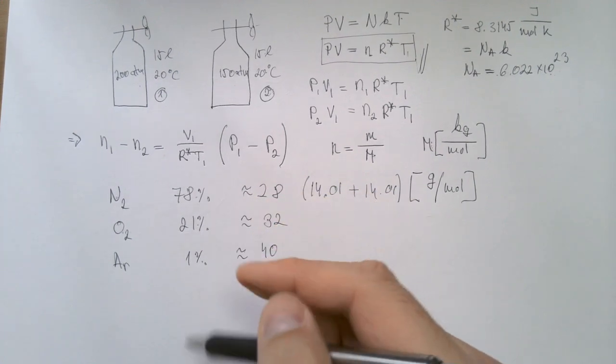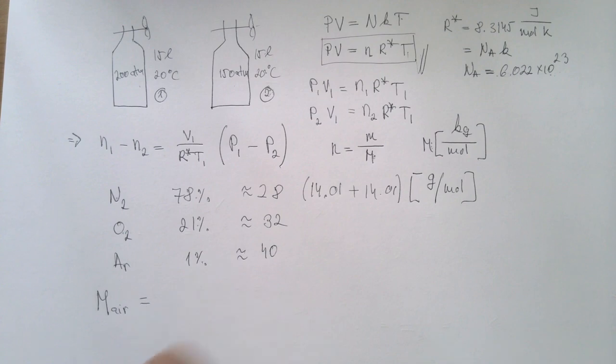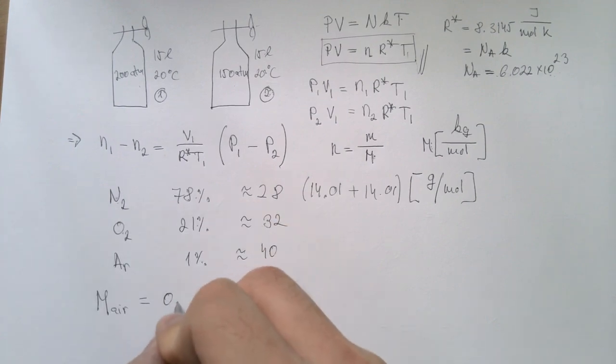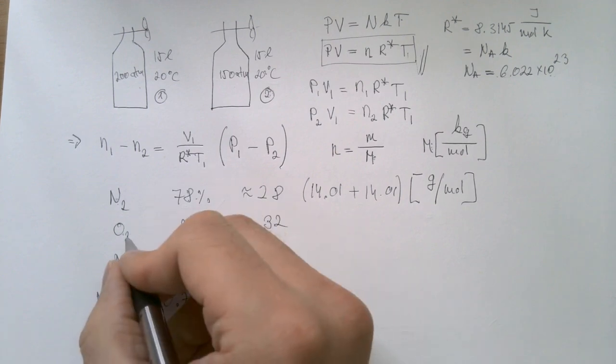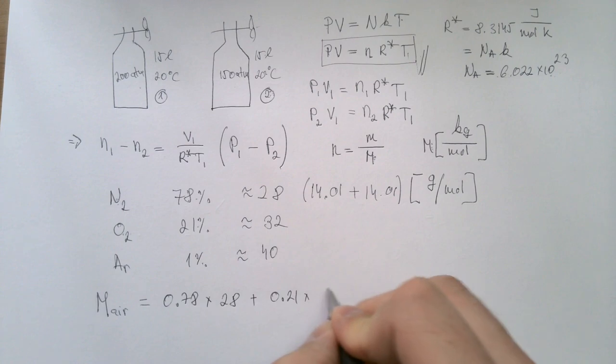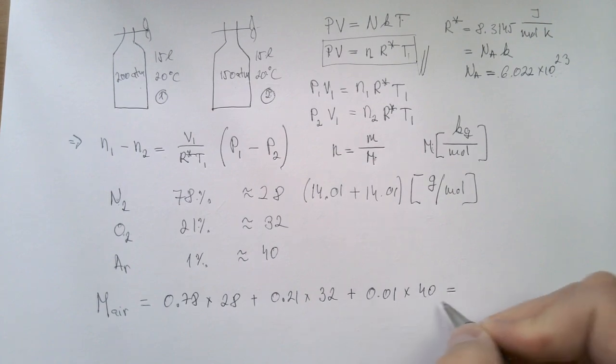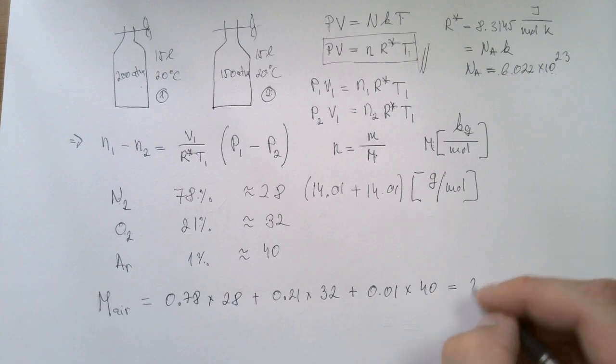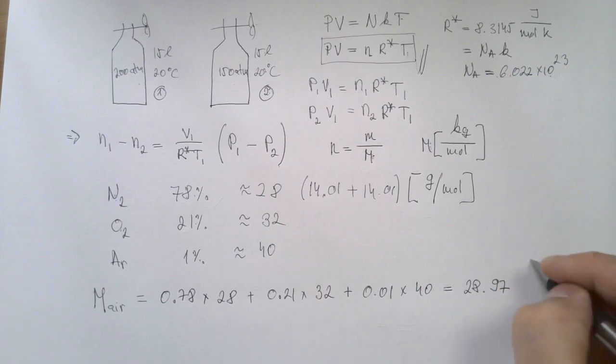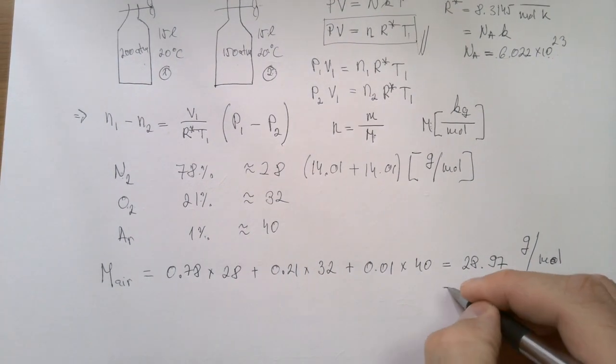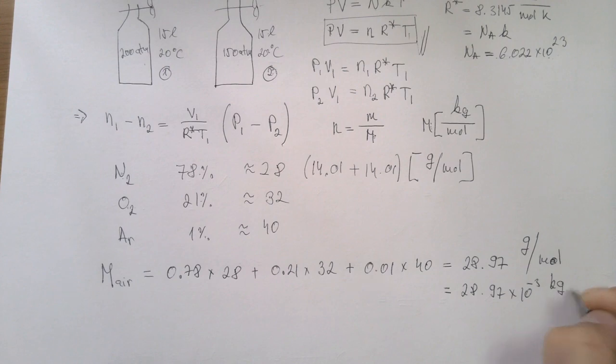Now, given that I know their relative percentages, I can calculate readily that the molar mass M of air is equal. Relative percentage of nitrogen is 0.78 times molar mass of nitrogen, that's 28. Plus relative percentage of oxygen is 0.21 times its mass 32. Plus relative percentage of argon is 0.01 times its mass is 40. So if you calculate all these, you will get that the molar mass of air is 28.97 grams per mole. Or this would further be equal 28.97 times 10 to power negative 3 kilograms per mole.